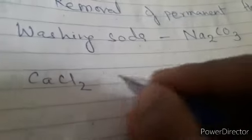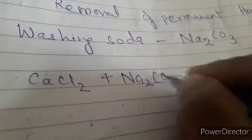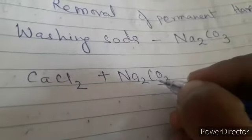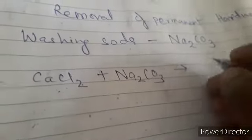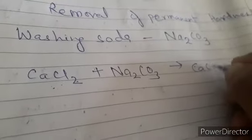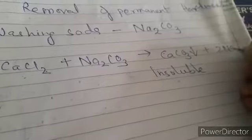We always take sodium carbonate in a calculated amount — you should know how much you are adding, whether 5 grams or 10 grams. When added to water containing the hardness salts, sodium carbonate reacts with calcium chloride and produces a white precipitate of calcium carbonate, which is insoluble, and 2 NaCl as the remaining product.